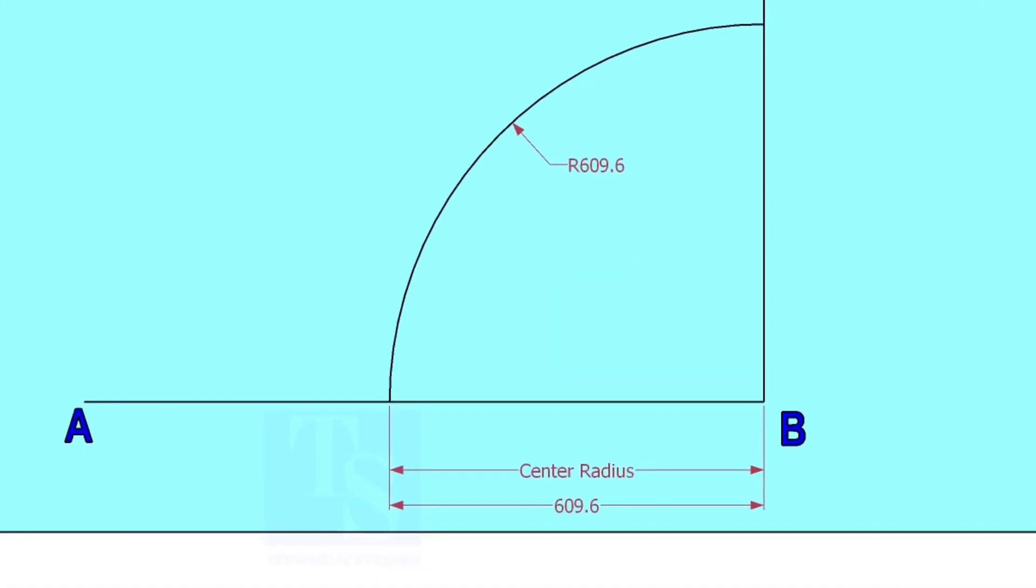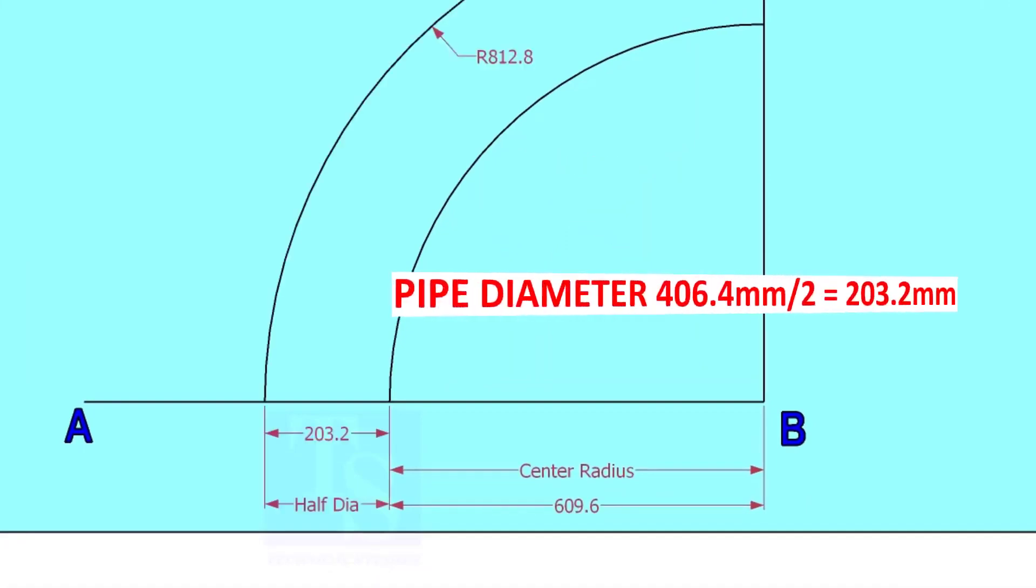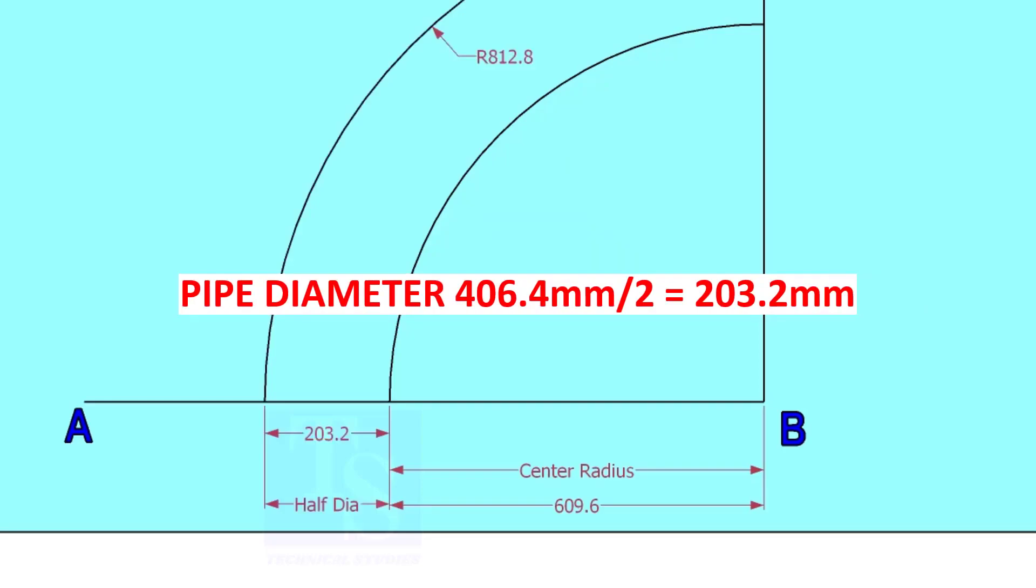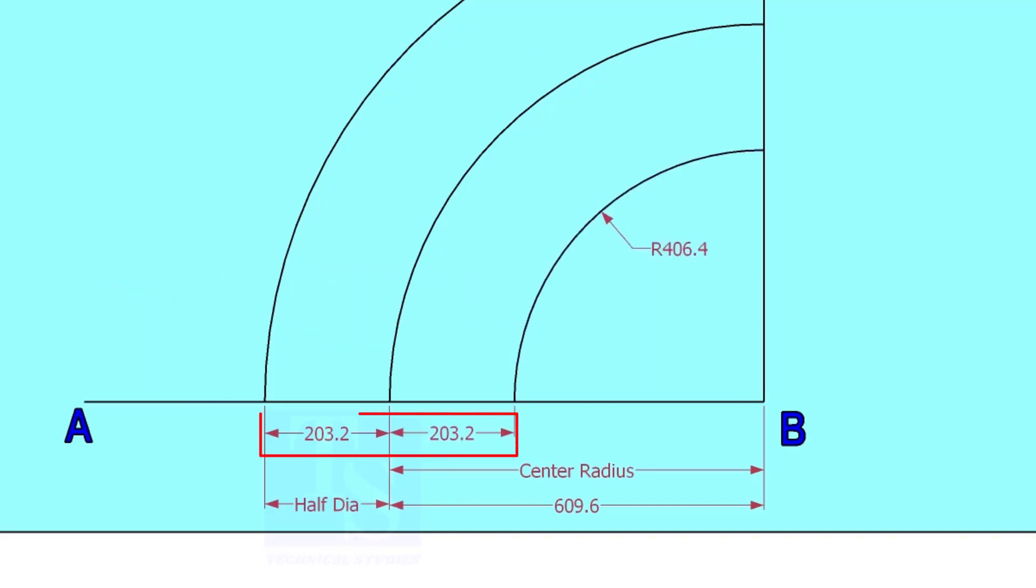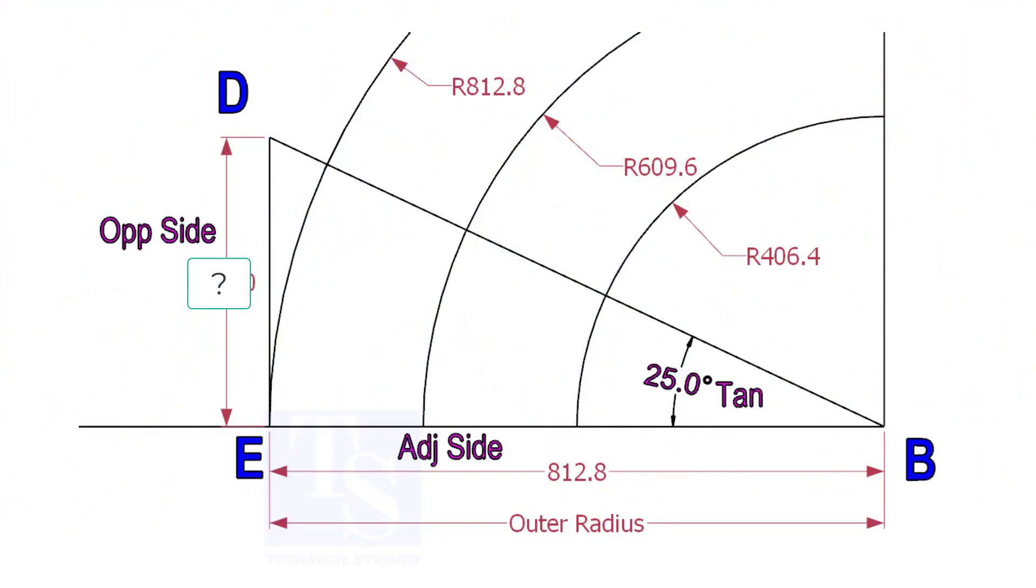Draw an arc with the center radius 609.6 millimeters. Mark the half OD arcs on both side of the center line. Mark a line 25 degree rotated from the base line AB.